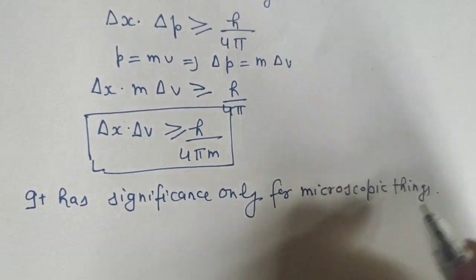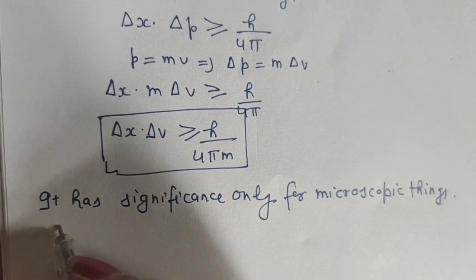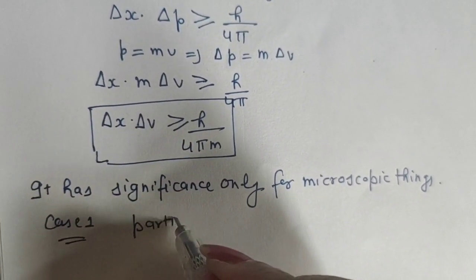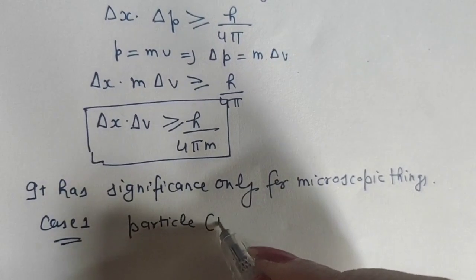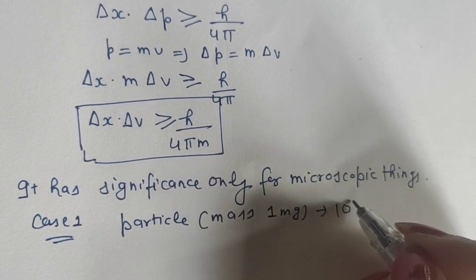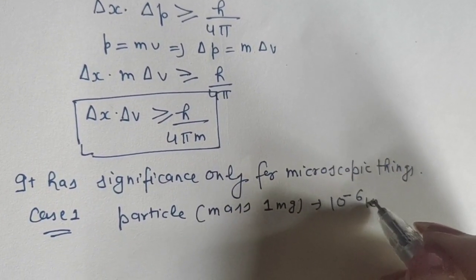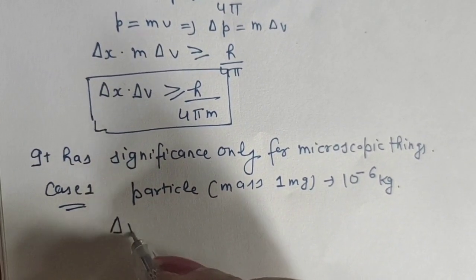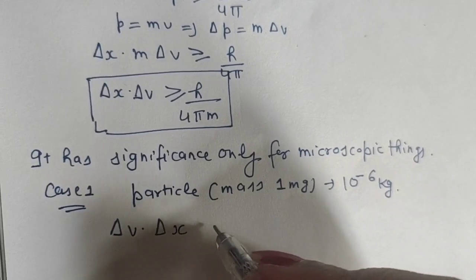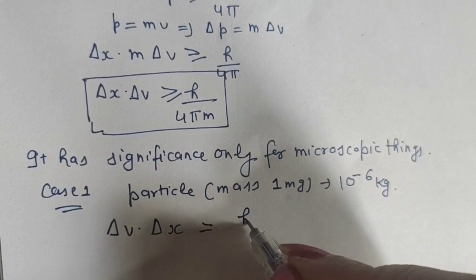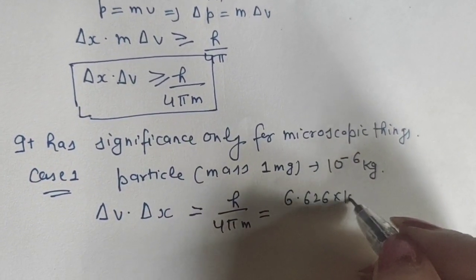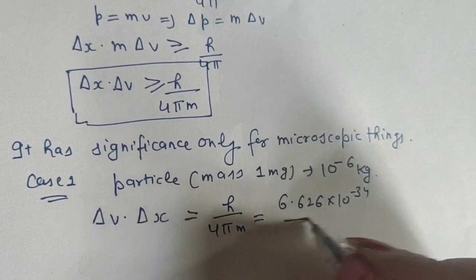Let us discuss how. Case 1: We have a particle of mass 1mg, which equals 10^-6 kg. The product of uncertainty in velocity and position, Δv·Δx = h/4πm. Putting values: 6.626×10^-34 divided by 4,